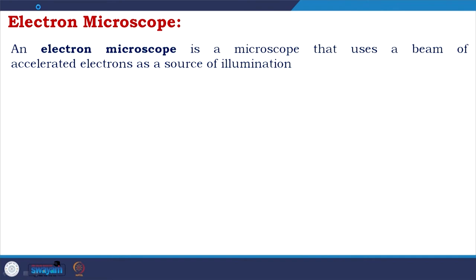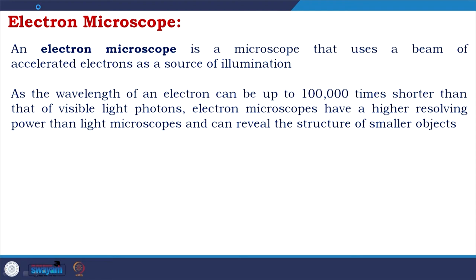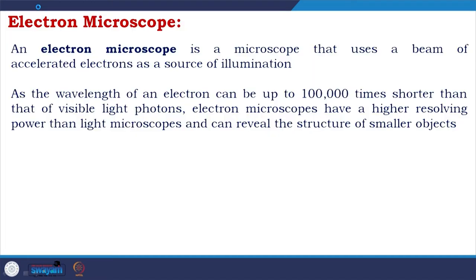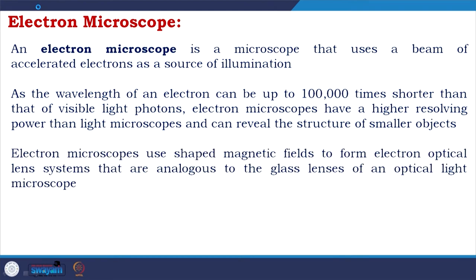An electron microscope is a microscope that uses a beam of accelerated electrons as the source of illumination instead of light or photons. As the wavelength of an electron can be up to 100,000 times shorter than that of visible light photons, electron microscopes have a higher resolving power than light microscopes and can reveal the structure of smaller objects. Long wavelength means less resolution, so the shorter electron wavelength gives far better resolution.